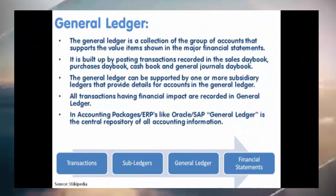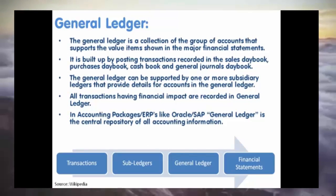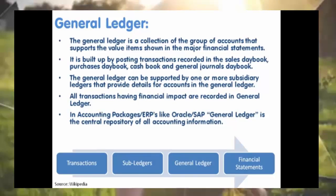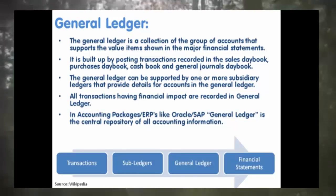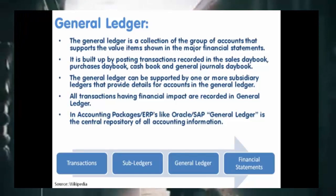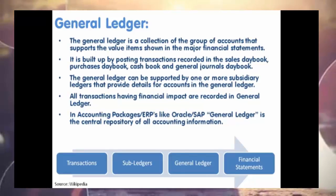What is a General Ledger? The General Ledger is a collection of the group of accounts that supports the value items shown in the major financial statements. Every corporation needs to prepare financial statements like balance sheet and profit and loss account. General Ledger provides the detailed account balances for the formation of these financial reportings.